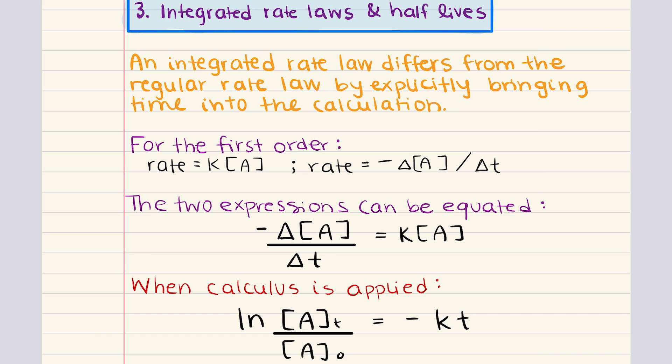Now an integrated rate law differs from a regular rate law because it explicitly brings time into the calculation. While regular rate laws give us the relationship between concentration and rate at a particular moment, integrated rate laws allow us to understand how the concentration of a reactant changes over time. We're going to begin by looking at a first-order reaction to break down how this works.